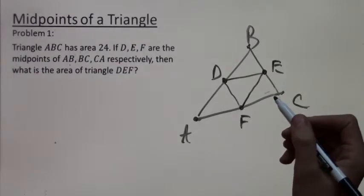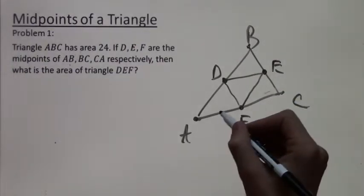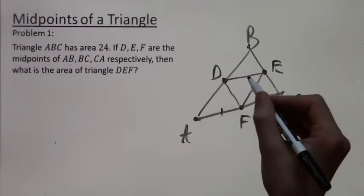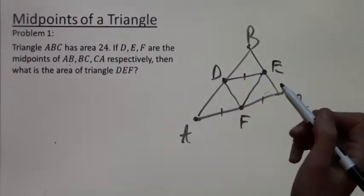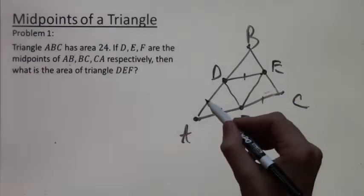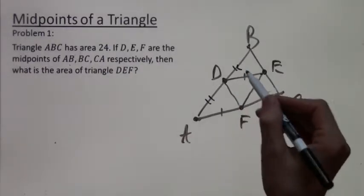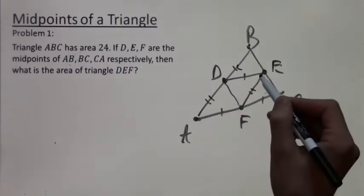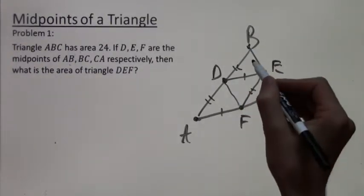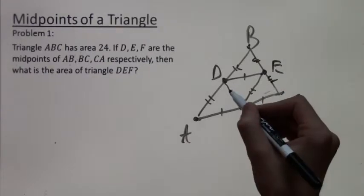And we're going to use an important property of the midsegment. The midsegment is equal to half the length of the corresponding base. But also the corresponding base is split into halves by the midpoint. So we get these triplets of equal sides that I'm labeling. So each midsegment is equal to each half of the corresponding base.